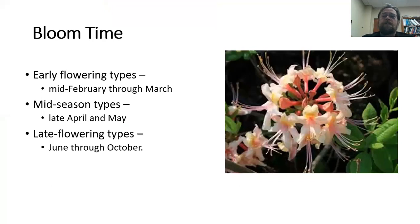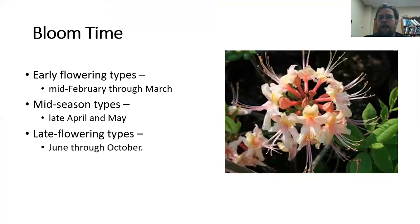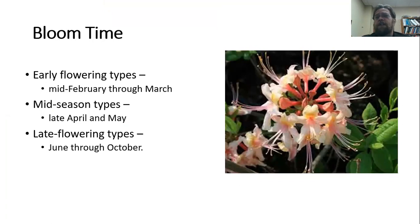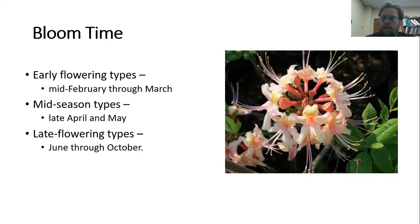One important thing to keep in mind when considering azalea varieties is that they bloom at different times. We have early flowering types blooming starting in February through March, then those blooming in April and May, and late bloomers that start in June and can continue all the way into fall. When choosing azaleas for your home landscape, consider getting varieties that bloom at different times so you can keep color progressing throughout the year.